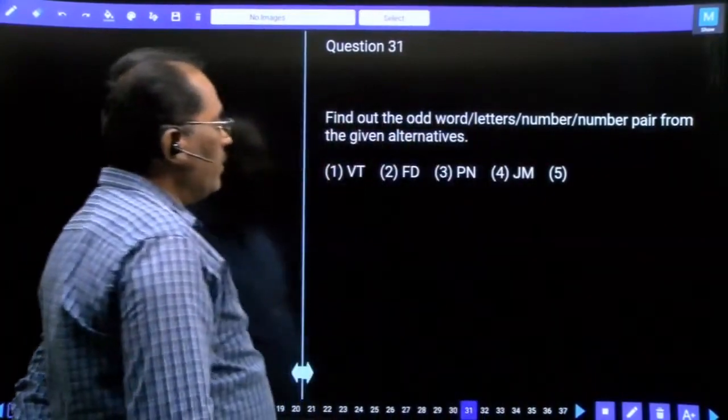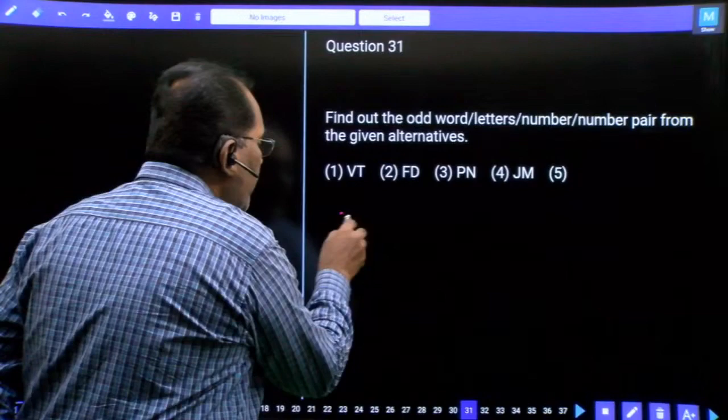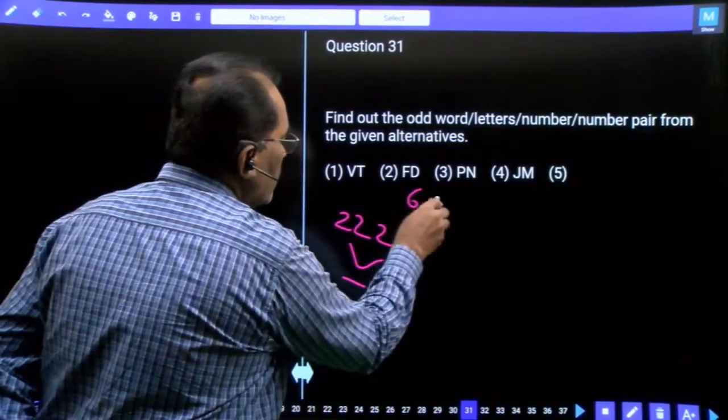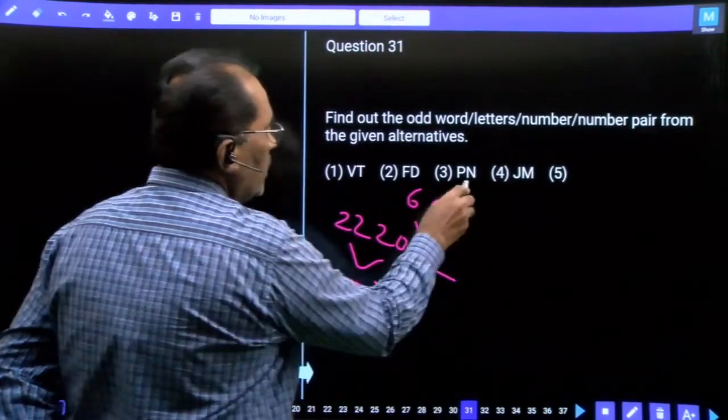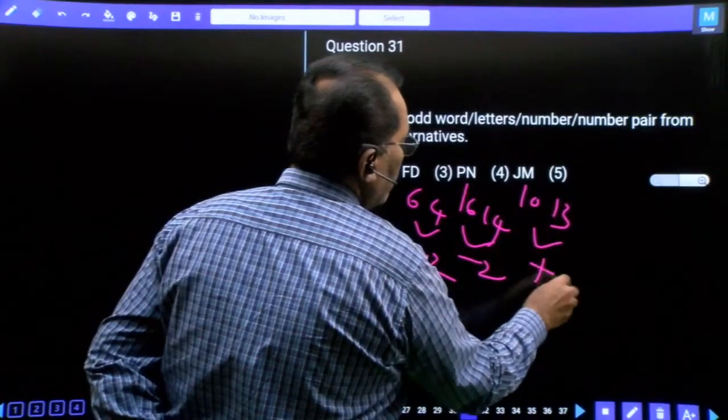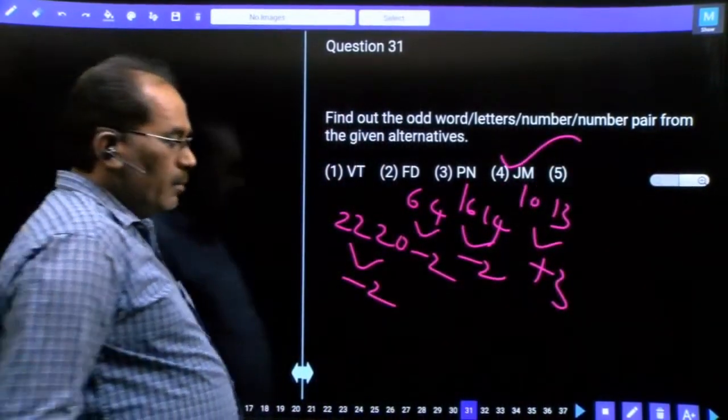Question number 31, this is a letter odd man out question. V is 22, T is 20, difference minus 2. Then 6, 4, difference minus 2. Then 16, 14, difference minus 2. But 10, 13, difference plus 3. Our option is fourth option.